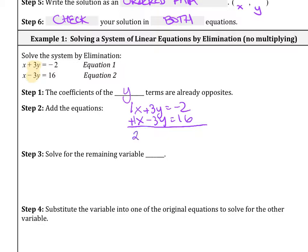If I add it together, remember there are ones in the front. 1x plus 1x is 2x. 3y minus 3y, well, that is our zero. And then negative 2 plus 16, that is positive 14. Then we're going to solve for x. So divided by 2, we find that x equals 7. So we found one of our solutions.